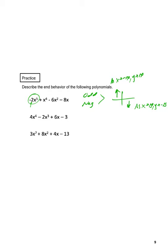The second one here: the leading term is 4x to the fourth. Now we have an even exponent and a positive leading coefficient, so everything's going up. No matter what we put in for x, it's going to end up being positive — negative 10 to the fourth is positive, 10 to the fourth is positive — and we're multiplying by a positive 4, so everything's positive there.